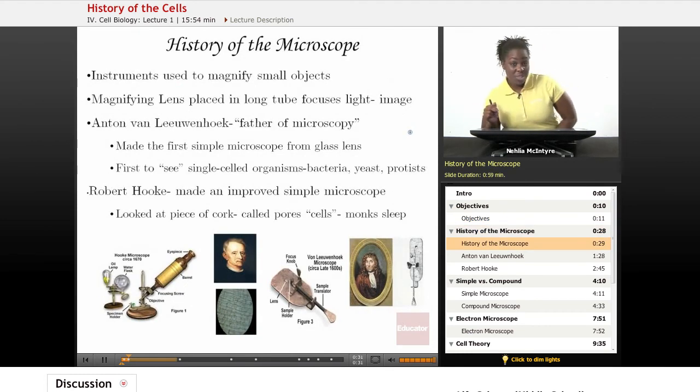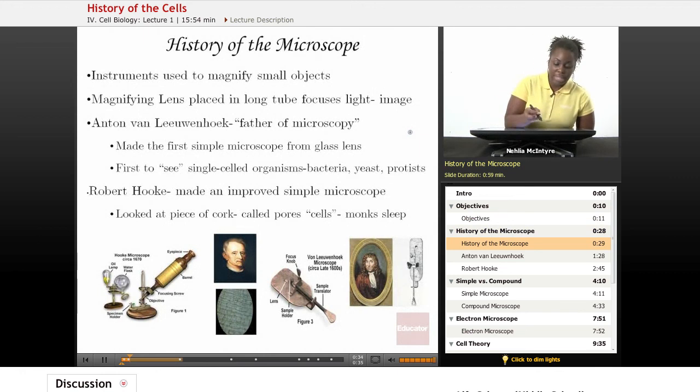Let's start by talking about the history of the microscope. The microscope is the instrument or tool used by scientists to magnify very small or microscopic objects, things we cannot see with the naked eye.